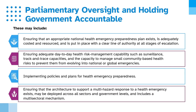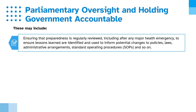Further responsibilities include ensuring that the architecture to support a multi-hazard response to a health emergency exists, may be deployed across all sectors and government levels, and includes a multi-sectoral mechanism. Governments must also ensure that preparedness is regularly reviewed, including after any major health emergency, so that lessons learned are identified and used to inform potential changes to policies, laws, administrative arrangements, standard operating procedures or SOPs, and so on.